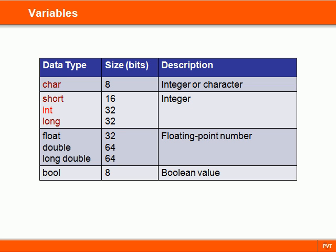Each integer type in this table must also be at least as large as the one preceding it. The same applies to the floating point types, where each one must provide at least as much precision as the preceding one.